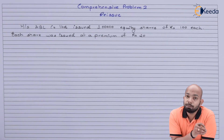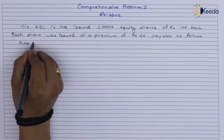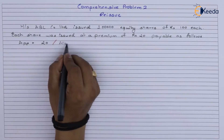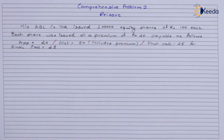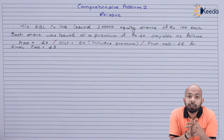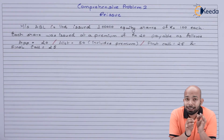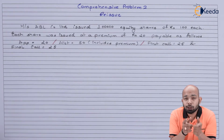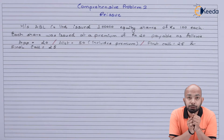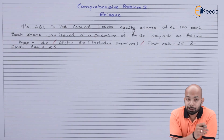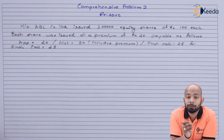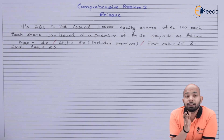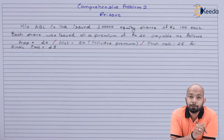The total issue price of ₹120 per share is payable as follows: ₹20 on application, ₹50 on allotment (which includes the premium of ₹20, so capital on allotment is ₹30), ₹25 on first call, and ₹25 on final call.